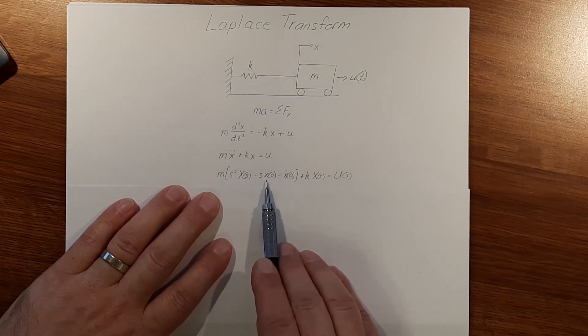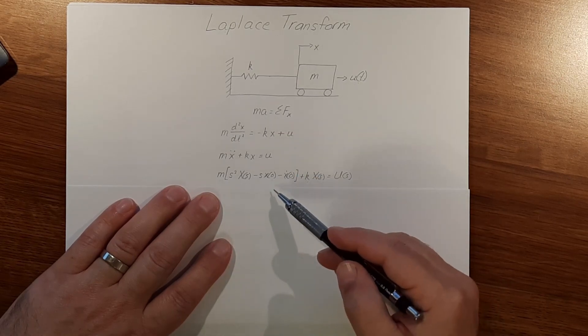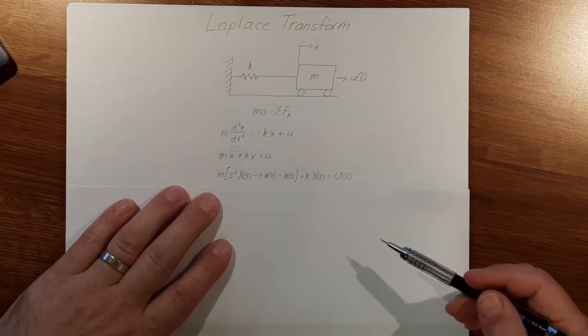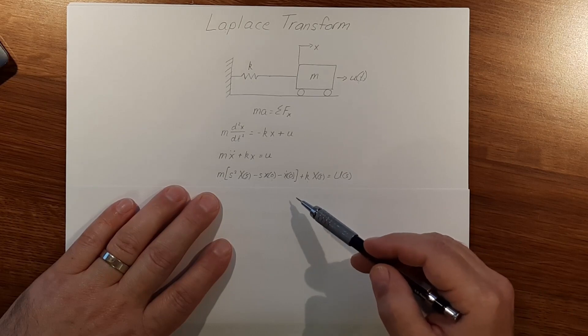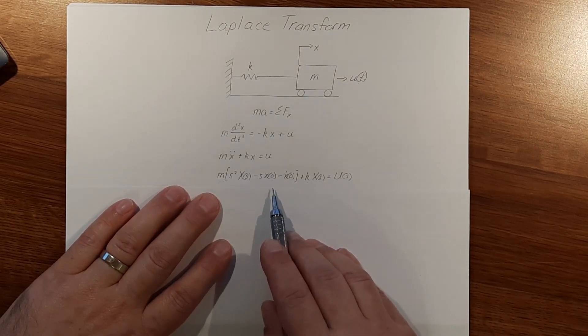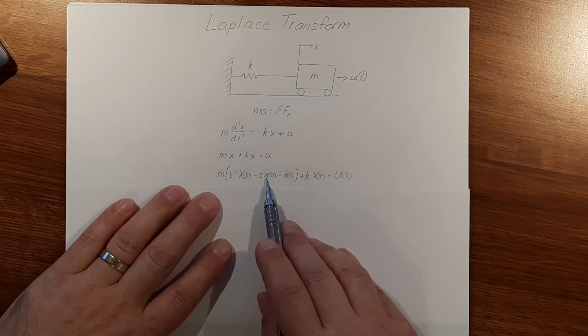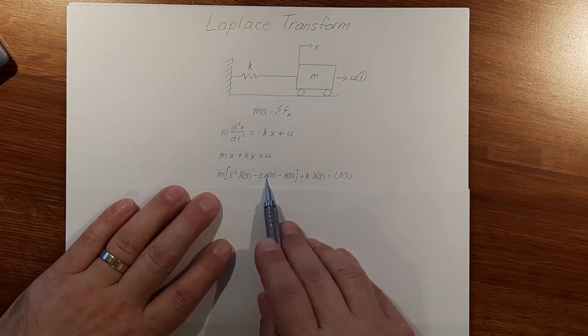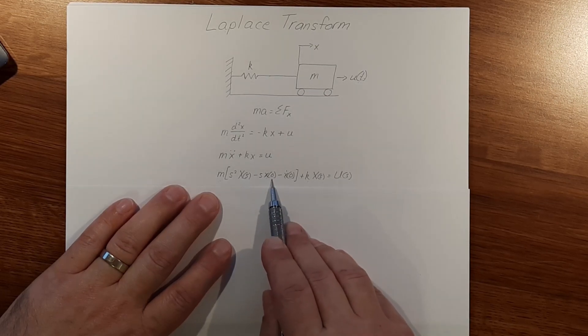Let's talk about what is this little x of zero and little x dot of zero. Well, these are starting positions. It wants to know where is the position of x at time zero or when it starts.